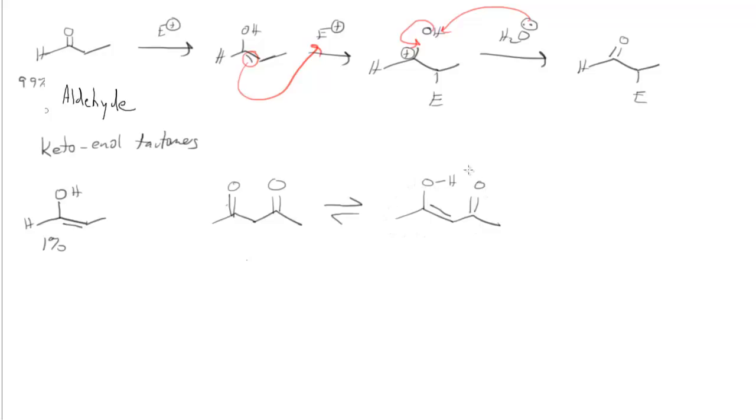So in beta-dicarbonyl if we form the enol on one side what actually can happen is we can get hydrogen bonding between the carbonyl and the enol. And with that hydrogen bonding comes more stability. So in the case of a beta-dicarbonyl it's about 76% enol while only 24% keto. So the equilibrium is shifted from back here with this aldehyde which is nearly 99% or maybe even greater than 99% aldehyde and 1% or even less than 1% enol.